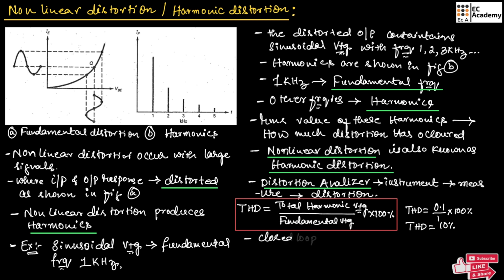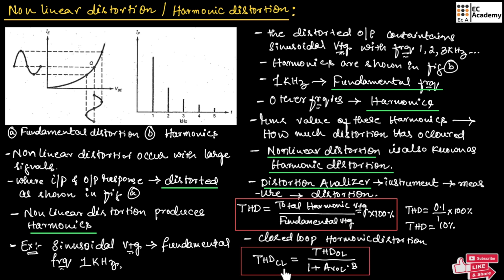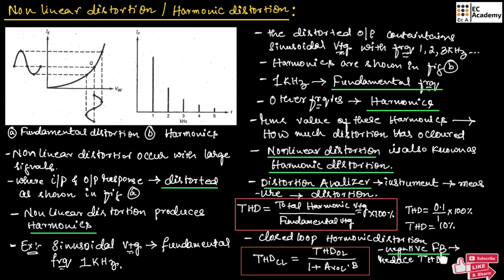Similarly, we can find closed-loop harmonic distortion using the formula: closed-loop total harmonic distortion equals open-loop total harmonic distortion divided by (1 plus open-loop gain multiplied by feedback fraction). You need to remember that negative feedback connected to an amplifier will reduce the total harmonic distortion.